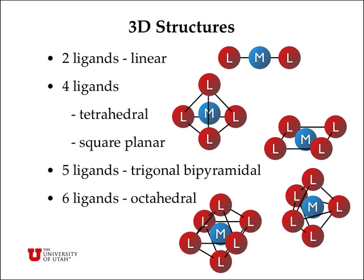These are the most common three-dimensional structures for metal complexes. For two ligands, the most common structure is linear — bent structures are unusual. For four ligands, you can have a tetrahedral arrangement or a square planar arrangement; square planar is more common for D8 metal ions like platinum-2 and gold-3. For five ligands, the most common arrangement is trigonal bipyramidal, with three equatorial ligands and two axial ligands. For six ligands, you have an octahedral arrangement — the most common — where all six ligands have identical metal-ligand bonds to the central metal ion.